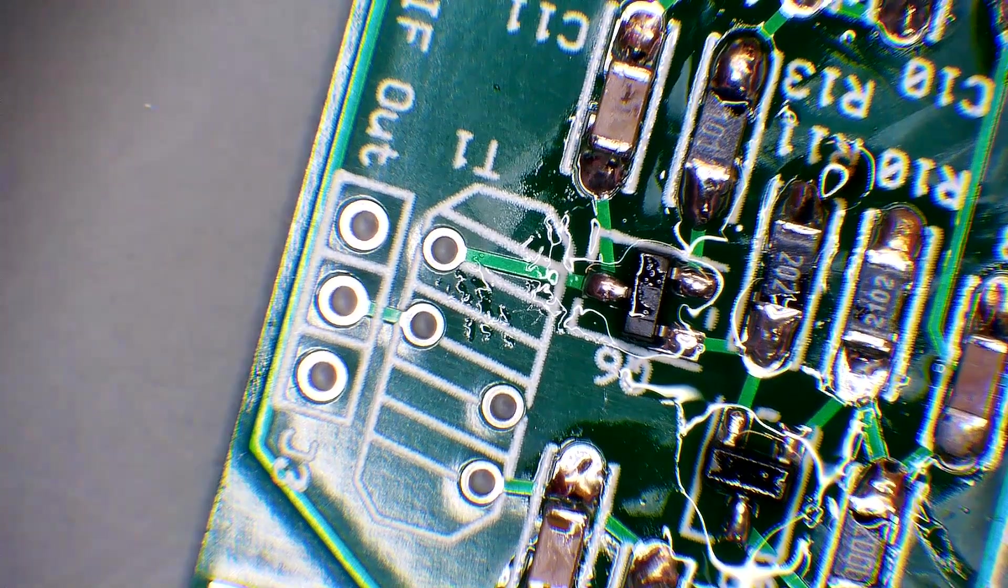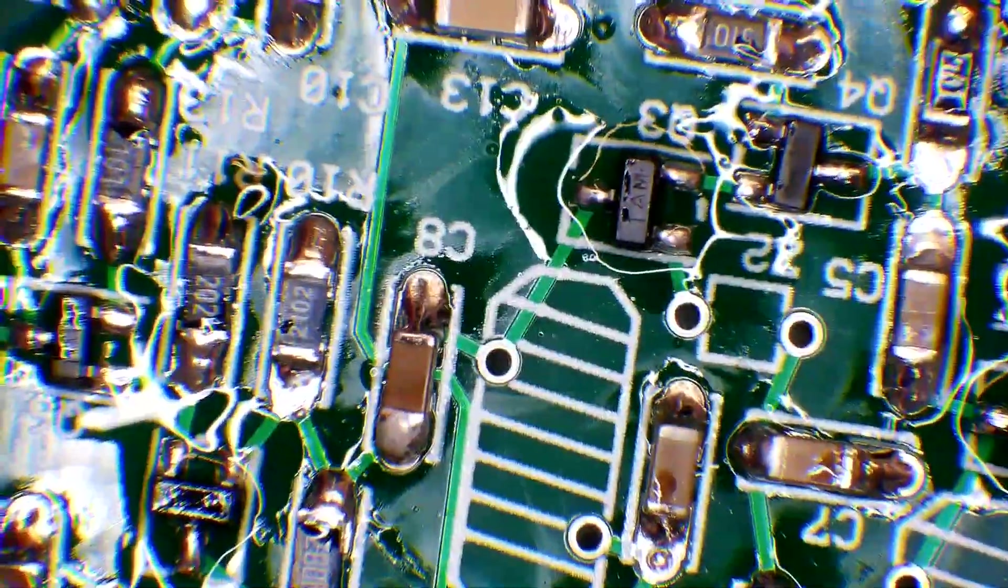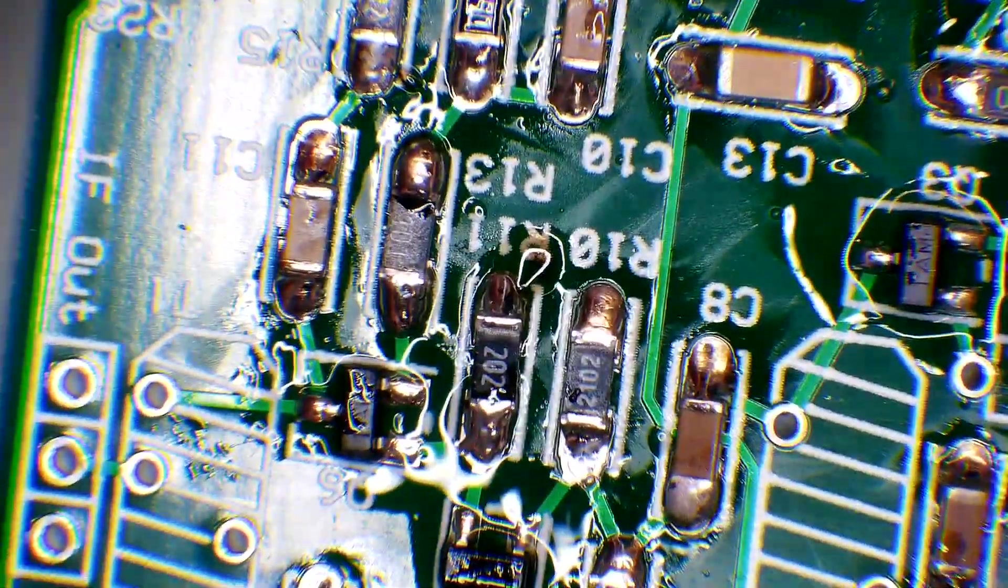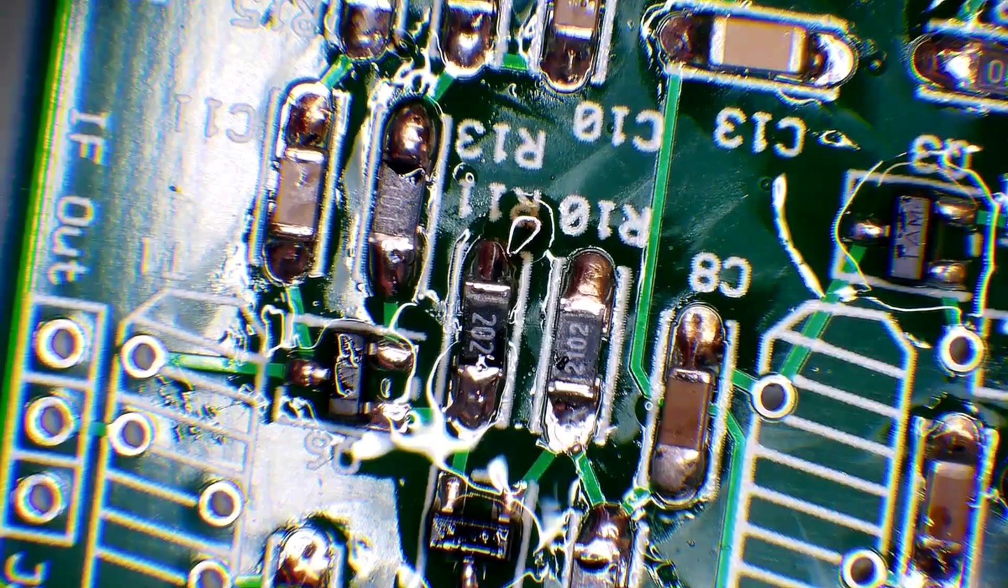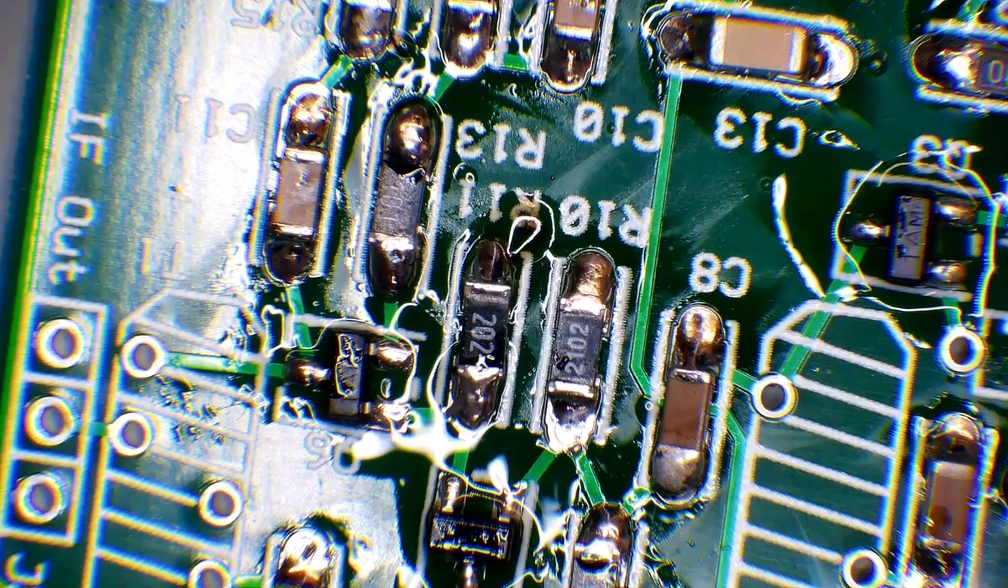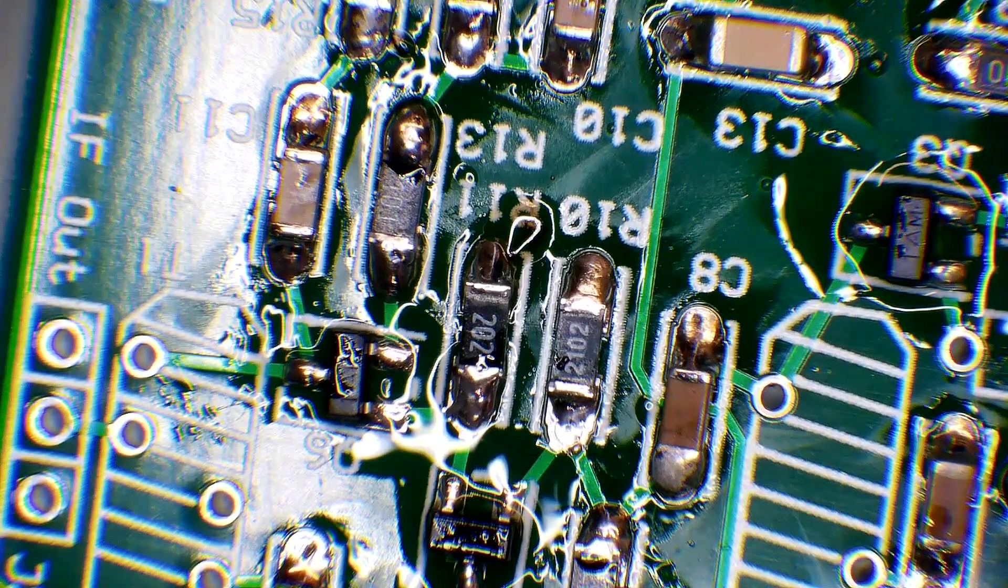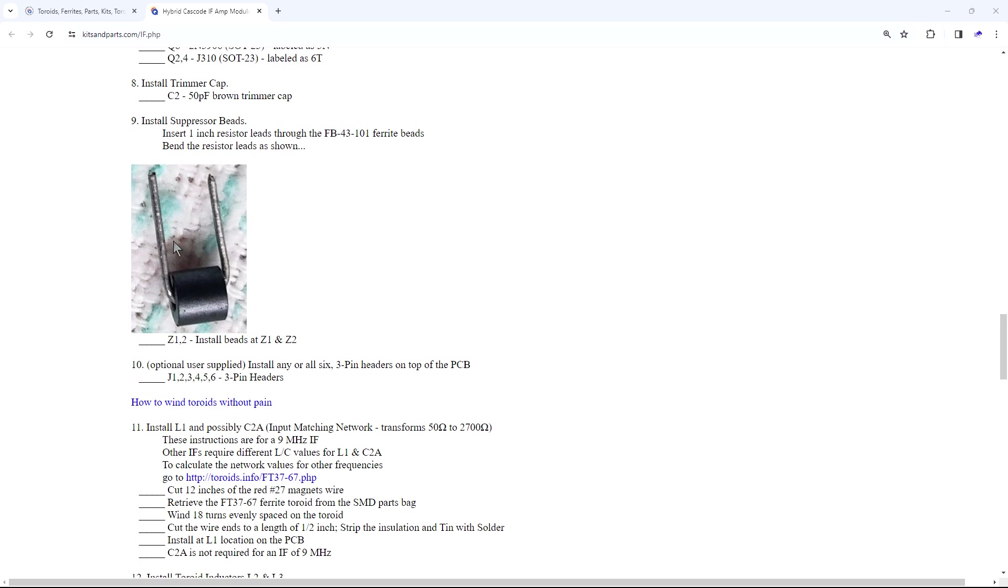Okay, we've got the transistors mounted at this point. And as you can see, it's a mess. There's flux everywhere, but that's okay. We're going to clean that up as I've said before. Now the next step, if we look over here at the instructions, next step is to create these ferrite beads. You need to insert one inch resistor lead through the FB43101 ferrite beads.